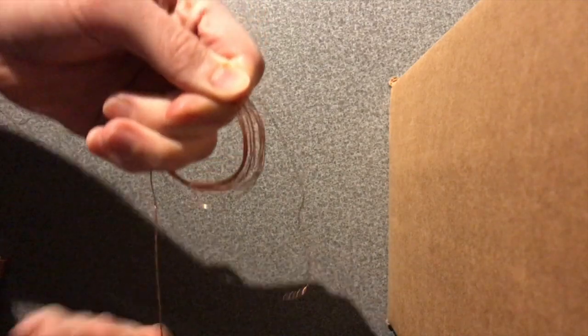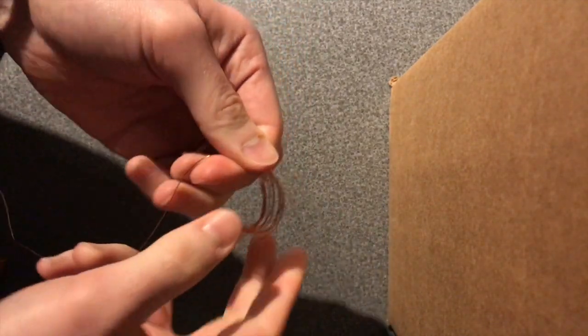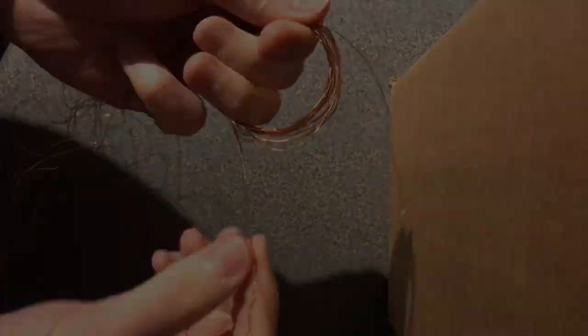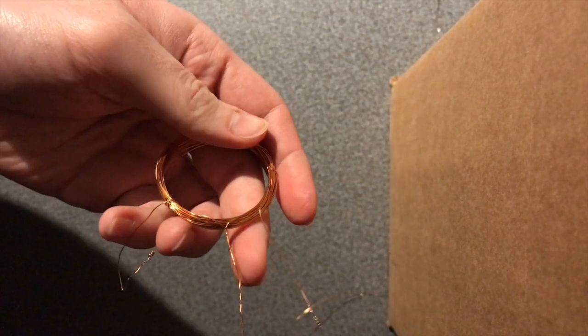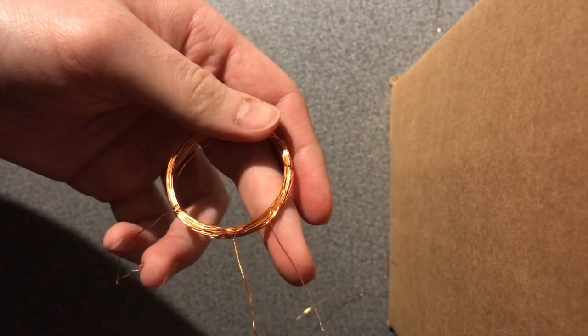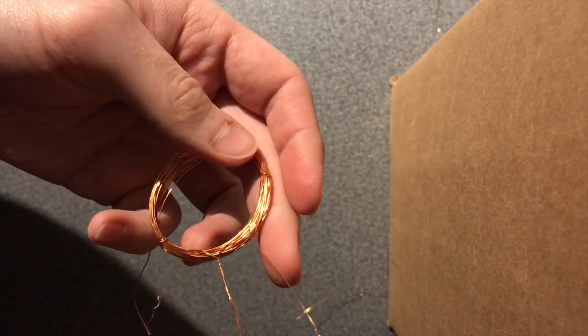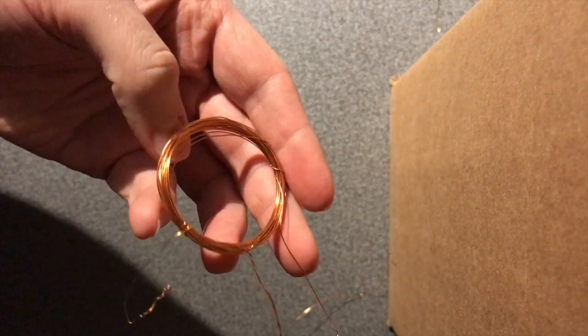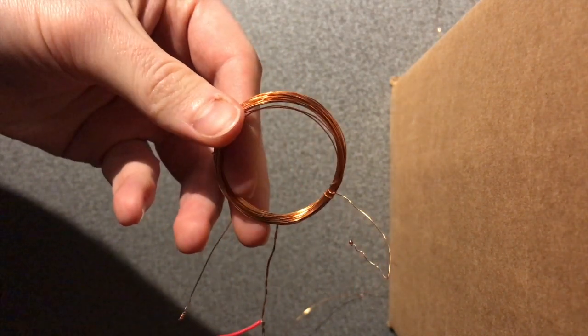And then you continue the looping process, which thankfully you don't have to watch. Some more looping, and in the end you get a 60 loop coil with two ends, and the middle piece acts as a third junction.